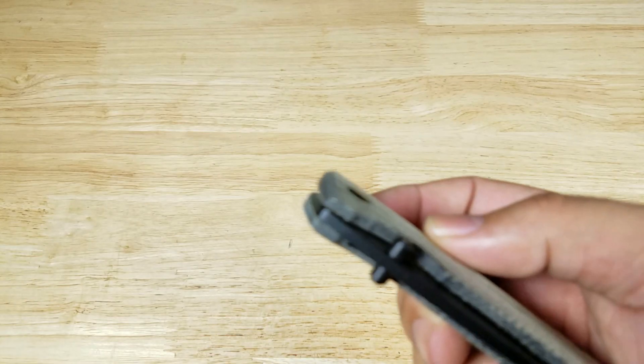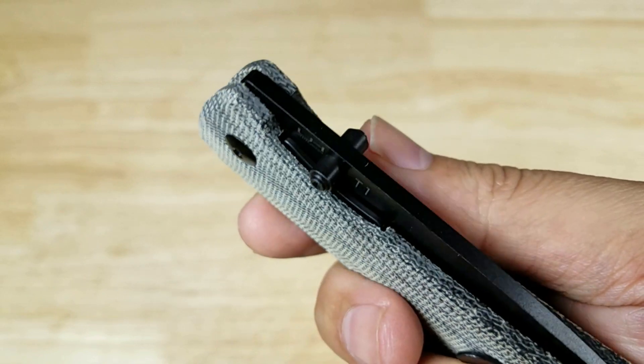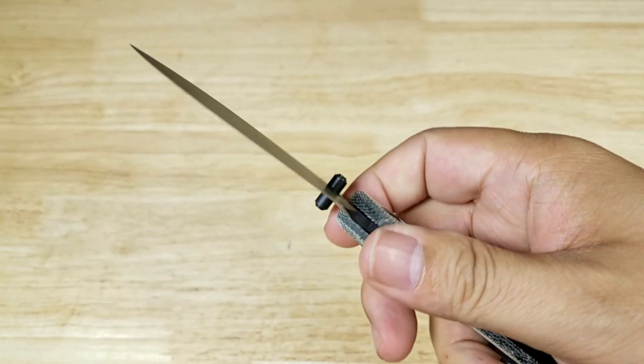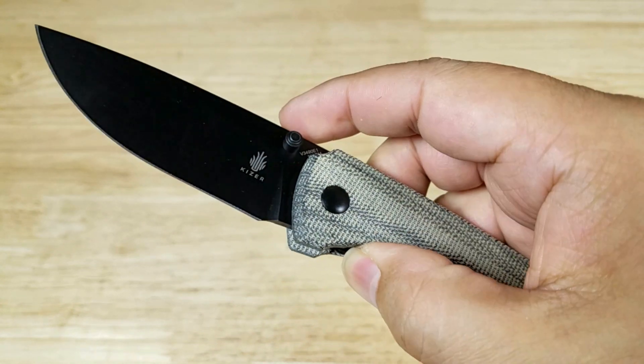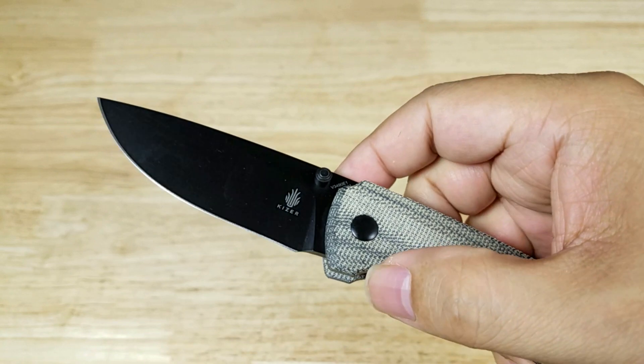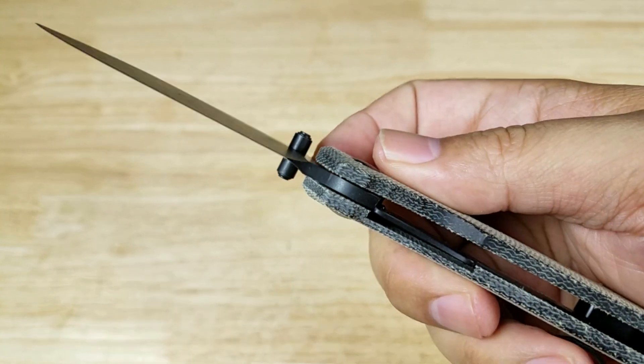Alright, let's have a look at the opening mechanism. We have dual thumb studs riding on a bearing pivot and it is lightning quick. Do that one more time. Just slings open. So smooth and so quick.